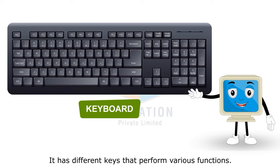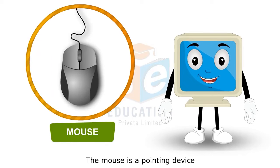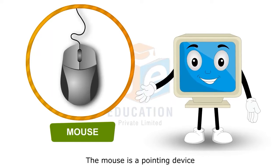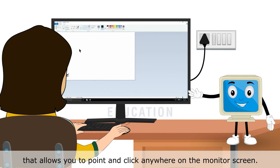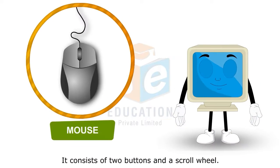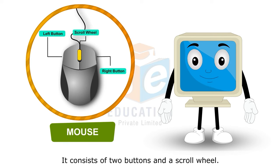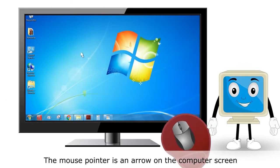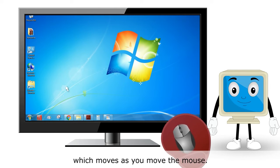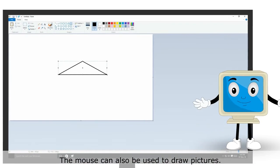The keyboard has different keys that perform various functions. The mouse is a pointing device that allows you to point and click anywhere on the monitor screen. It consists of two buttons and a scroll wheel. The mouse pointer is an arrow on the computer screen which moves as you move the mouse. The mouse can also be used to draw pictures.